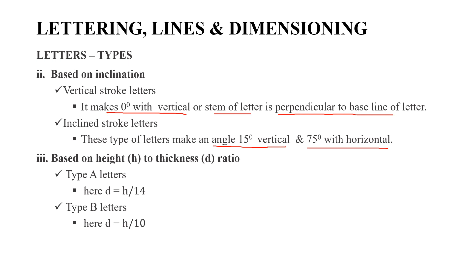The next type of letters is based on height to thickness. There are Type A letters and Type B letters. Type A letters: D is equal to S divided by 14. Type B letters: D is equal to S divided by 10.